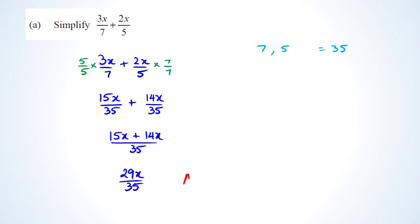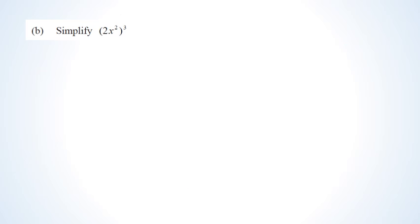If you give an answer without an x, it's not achieved because that's not what the question is asking. Next: simplify (2x squared) cubed. The long method is 2x squared times 2x squared times 2x squared. That gives 2 times 2 times 2 equals 8, and x squared times x squared times x squared equals x to the power of 6. So the final answer is 8x⁶.